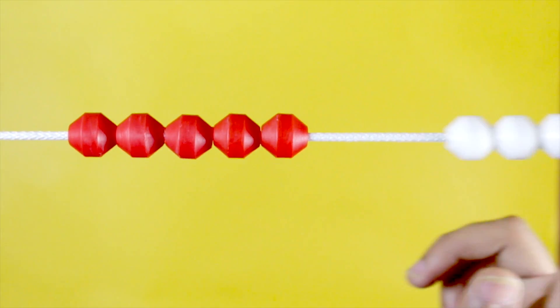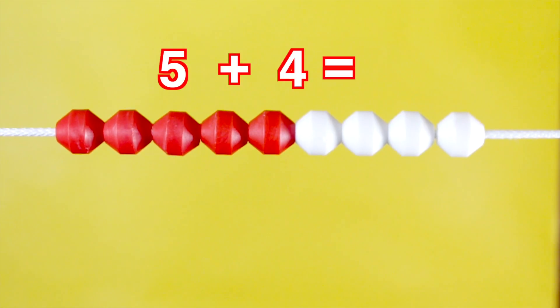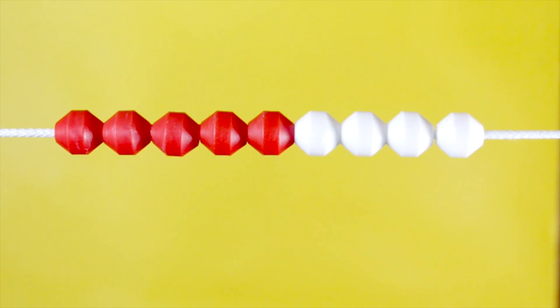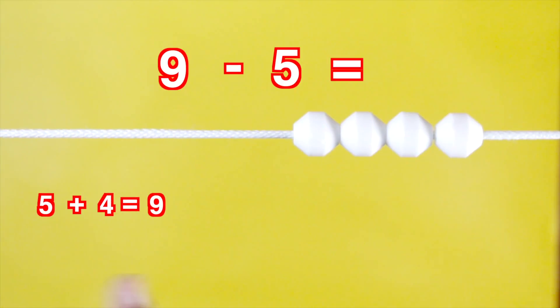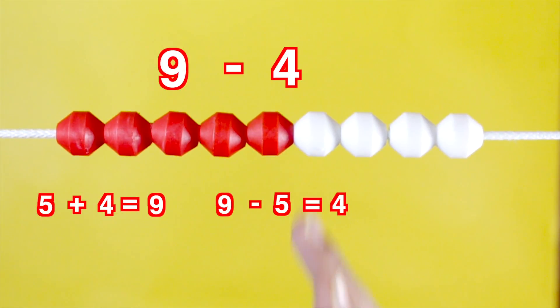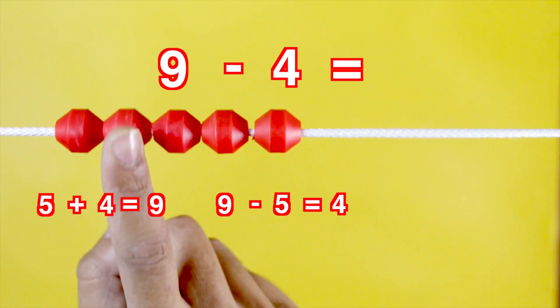Let us see how addition and subtraction are related. If we add 5 to 4, we get 9. Now, from 9 remove 5. We are left with 4. If 4 is removed from 9, we are left with 5.